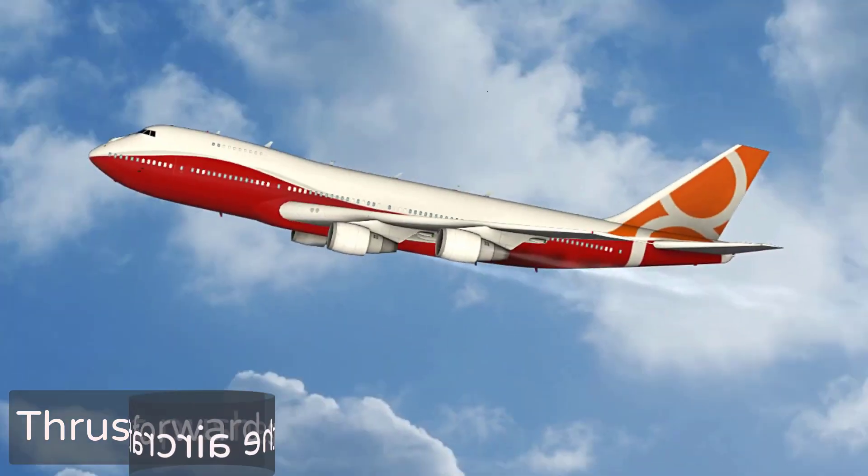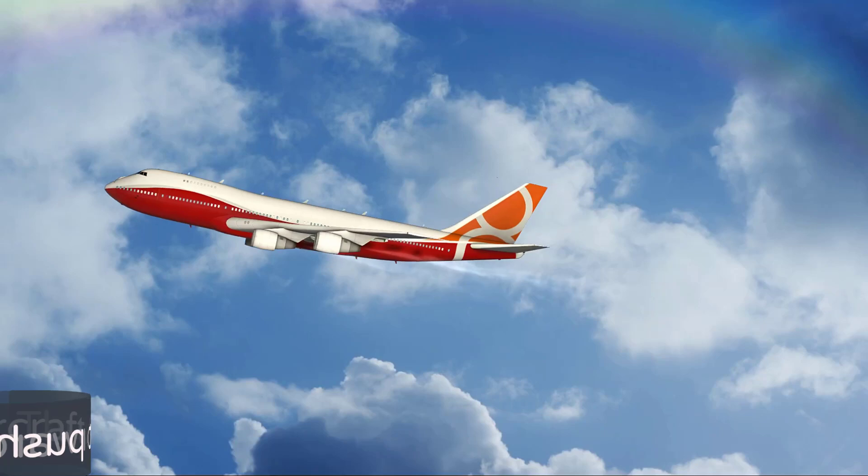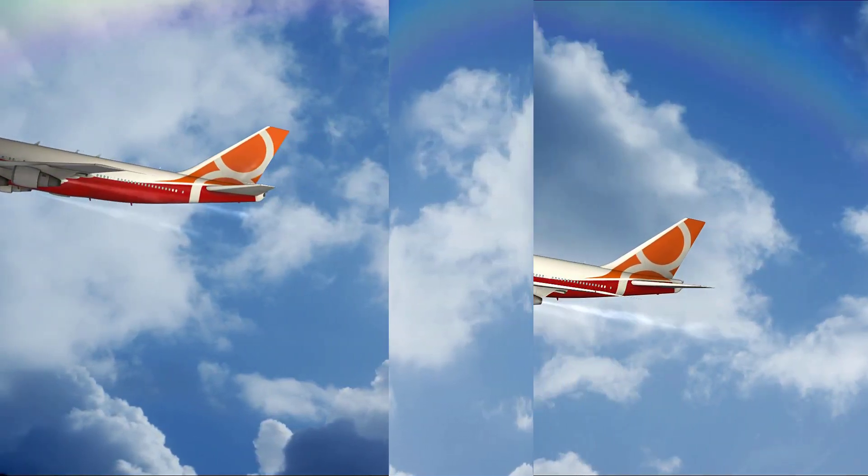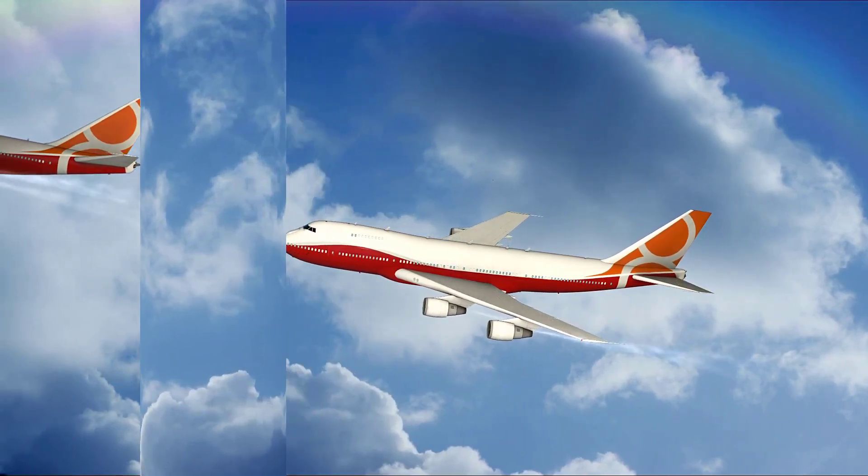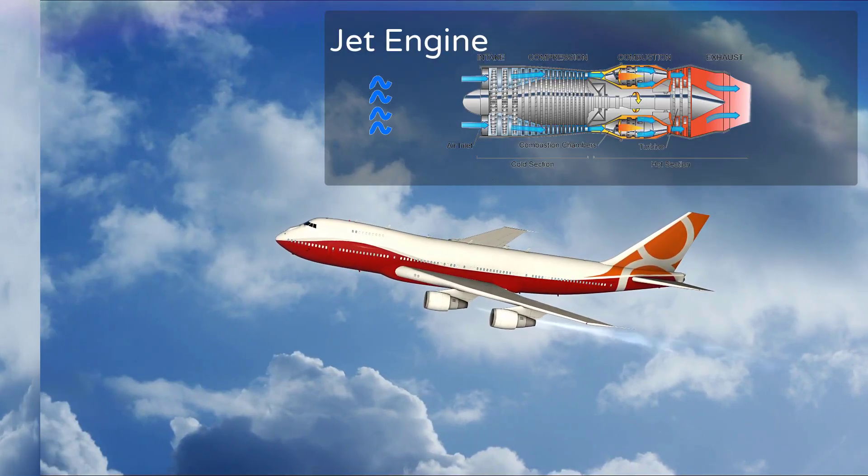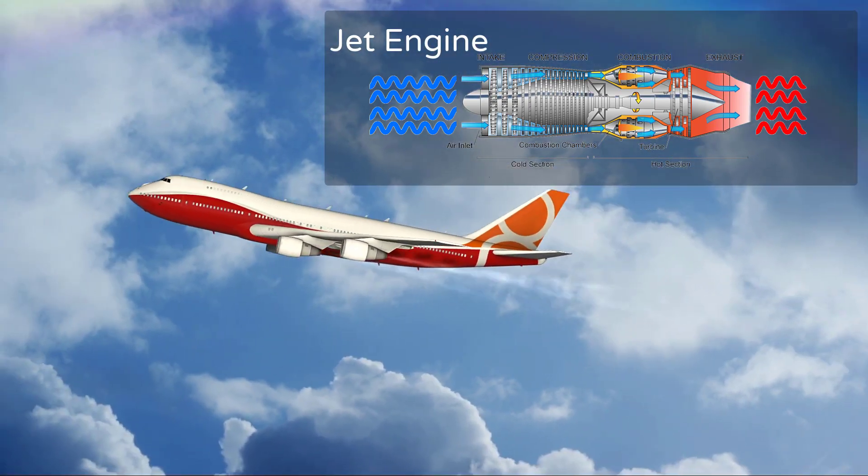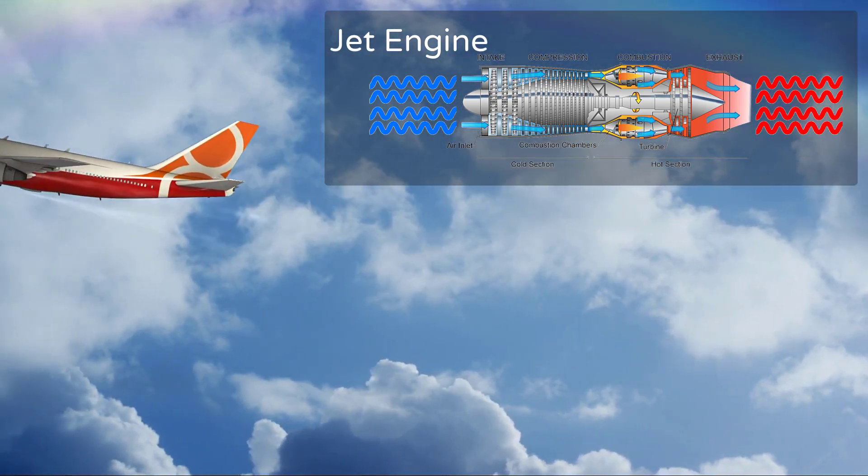Thrust can be explained by Newton's third law of motion, which states that for every action, there is an equal and opposite reaction. In the context of an aircraft's jet engine, the action is the expulsion of gases at high speeds, and the reaction is the generation of thrust, pushing the aircraft in the forward direction.